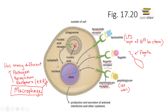Pathogen recognition receptors can recognize different components of bacteria, as well as viruses, fungi, and other parasites. But we're keeping it simple here and just talking about bacteria in this particular diagram.